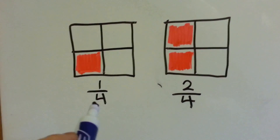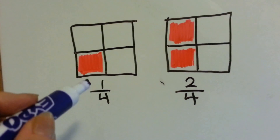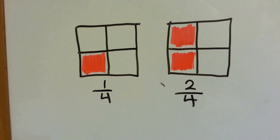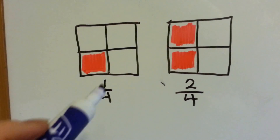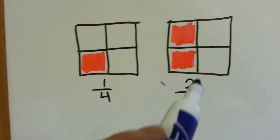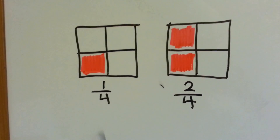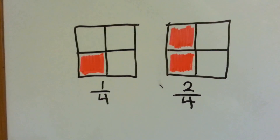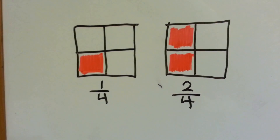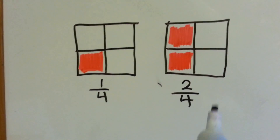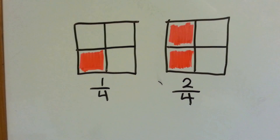They have a four for the denominator. This one's numerator is one, and this one's numerator is two. This is one-fourth, this is two-fourths. Which one has more area colored in? This one does — the two-fourths.